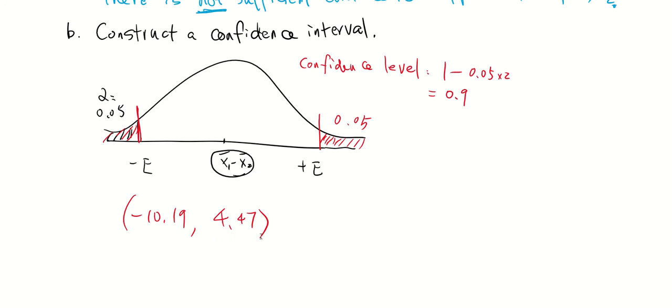Since this confidence interval is used to estimate mu1 minus mu2, you can tell 0 is in this interval. That means it is possible that mu1 minus mu2 is equal to 0. So we can't reject the null hypothesis because this is the null hypothesis, mu1 minus mu2 is equal to 0. So we fail to reject the null hypothesis. And you make the same conclusion that there is not sufficient evidence to support our claim.